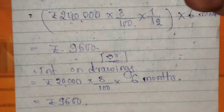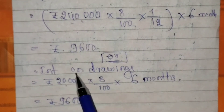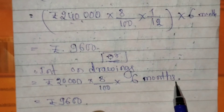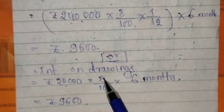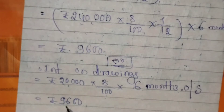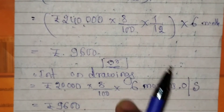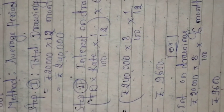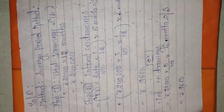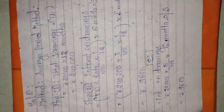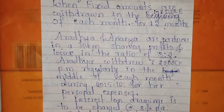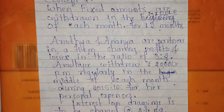You can also solve this in a shortcut way. Interest on drawings = Average drawings per month × Rate ÷ 100 × average outstanding period = ₹20,000 × 8 ÷ 100 × 6 months = ₹9,600. If you have any doubts, you can ask me. Please pause the video and note down the answer.